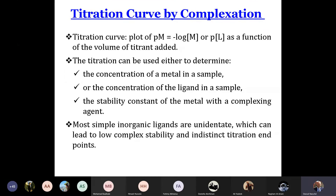We pass to the last part of the complexation reaction, which is the titration by complexation. To remember that complexation is the reaction between a metallic ion M plus a ligand L, which can be monodentate or polydentate, to form the complex ML. As KF of ML increases, that means the complex ML is more stable, so the reaction M plus L giving ML is favored in the direction of formation of the complex.